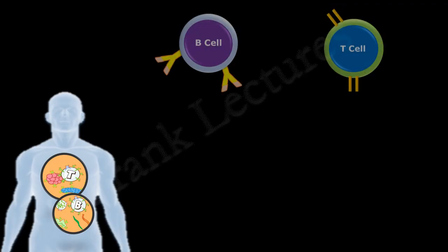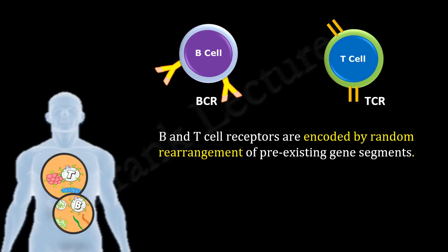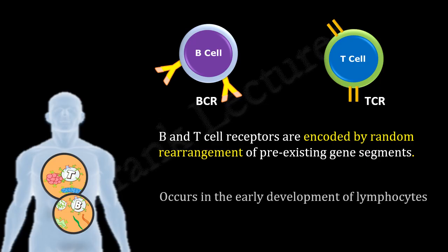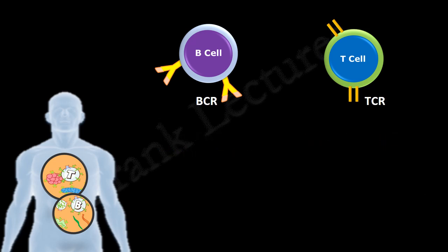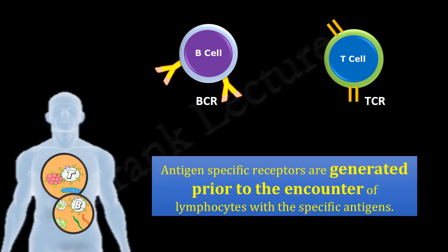B and T cells express antigen-specific receptors, namely the B cell receptor and T cell receptor. As we have understood in previous video lectures, B and T cell receptors are encoded by random rearrangements of pre-existing gene segments and genes. This process occurs in the early development of lymphocytes.